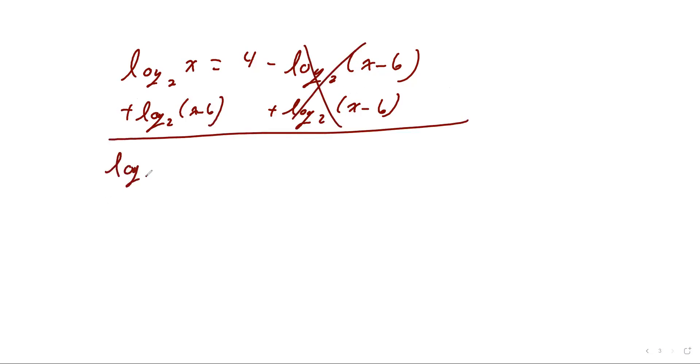So then I get log base 2 of x plus log base 2 of x minus 6 equals 4. Now that you've actually watched the 7.4 video, we can condense these logarithms. So since adding means to multiply, I can write log base 2 of x times x minus 6. And then once it's just one logarithm that's isolated, now I can turn that into an exponential. So this will be 2 raised to the 4th equals x times x minus 6.